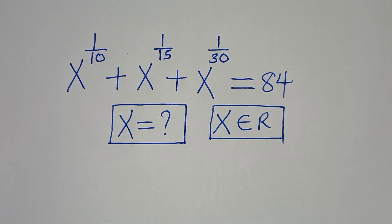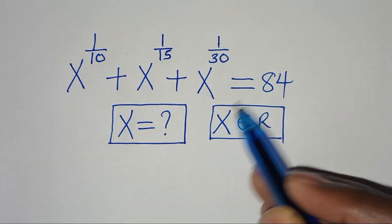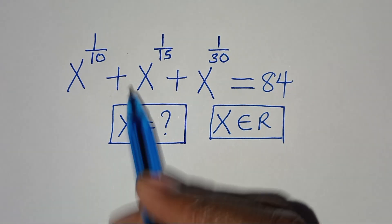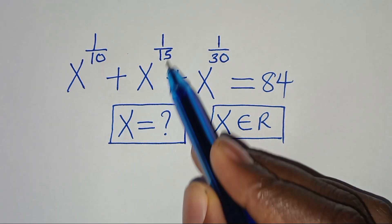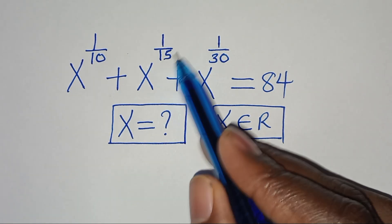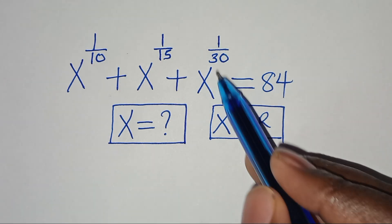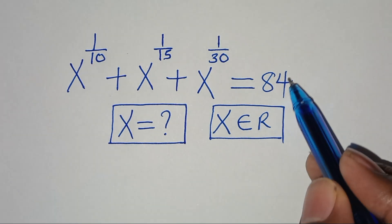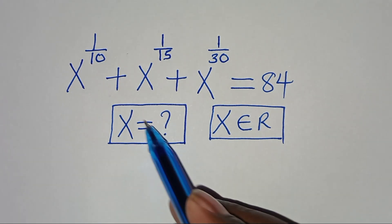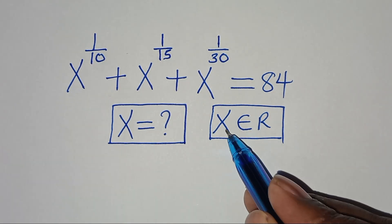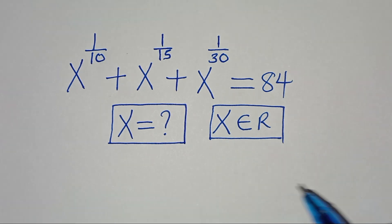Hello everyone, you are welcome to solve this nice algebra problem: x to the power of 1 over 10, plus x to the power of 1 over 15, plus x to the power of 1 over 30, equals 84. What is the value of x, given that x is an element of real numbers?